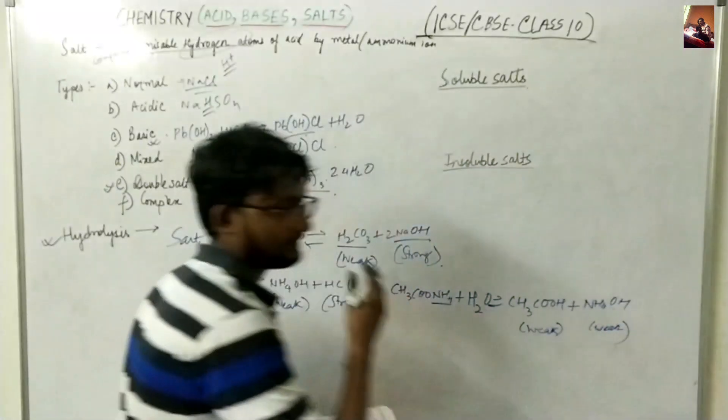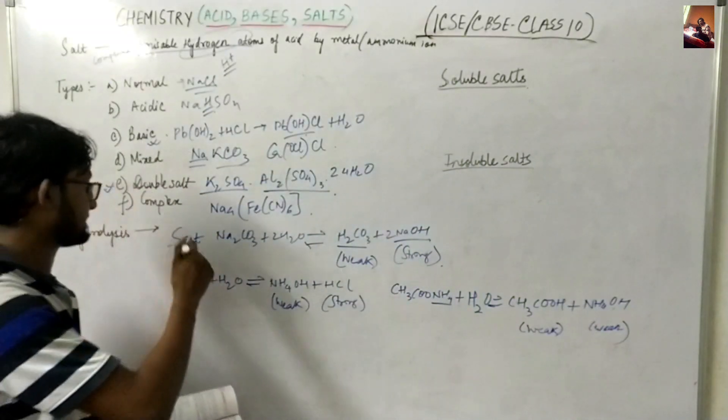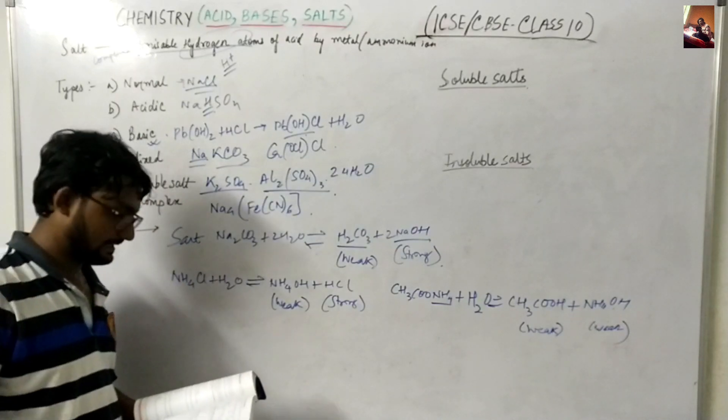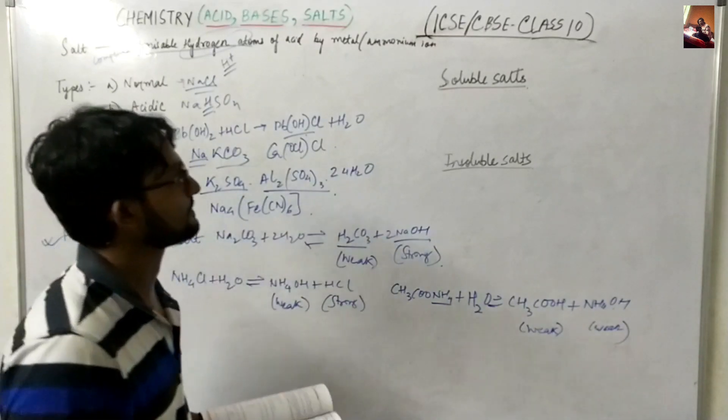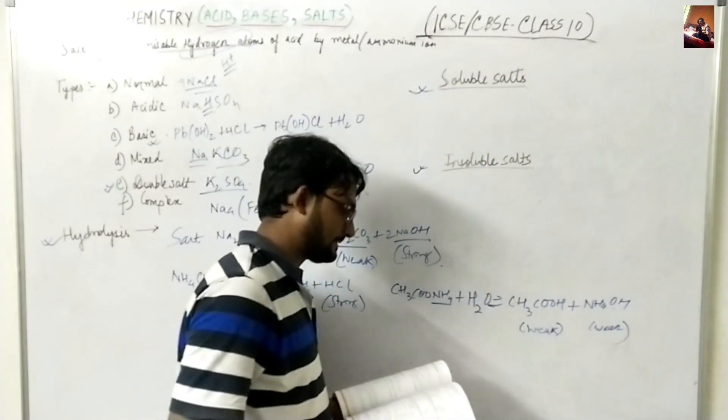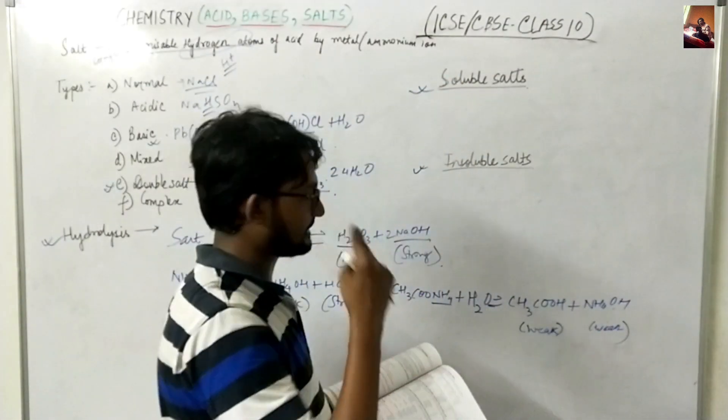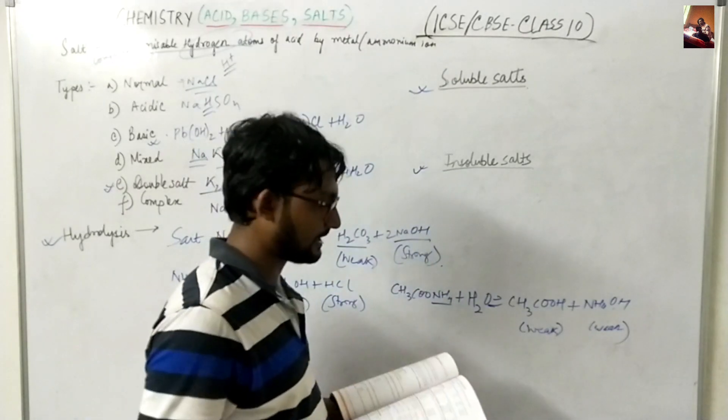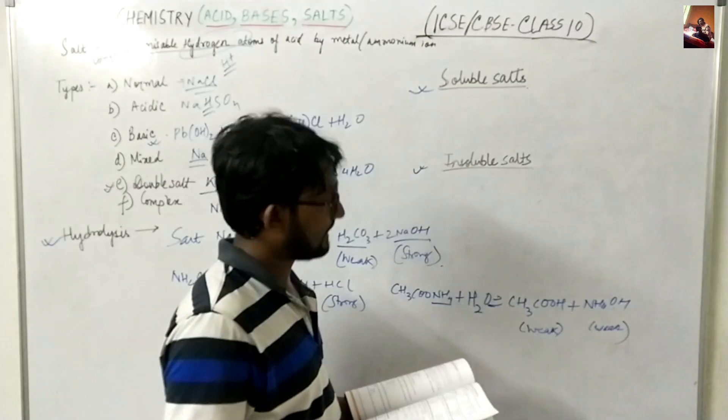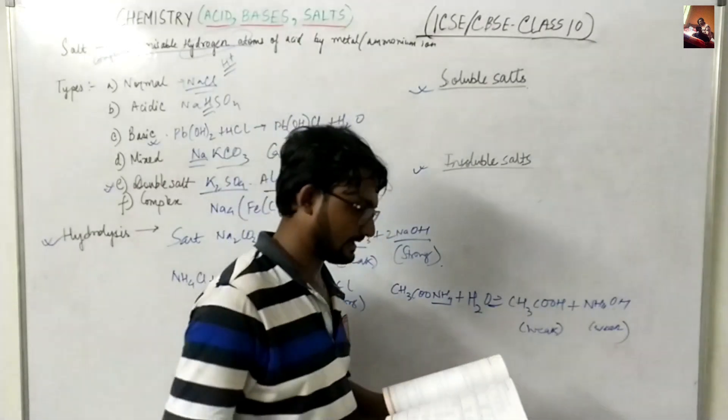So you guys can write down these examples or reactions. And like some other preparations as well. I will tell you how to prepare soluble and insoluble salts. The same thing like direct composition. In case of soluble salts like sodium and chlorine you can get sodium chloride. Zinc and hydrochloric acid you can get zinc sulfate and hydrogen.